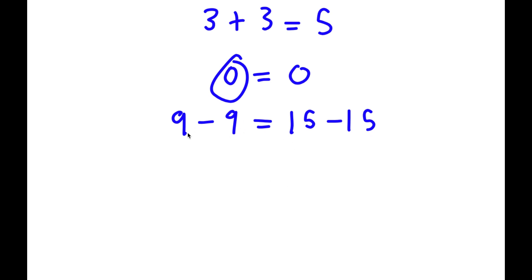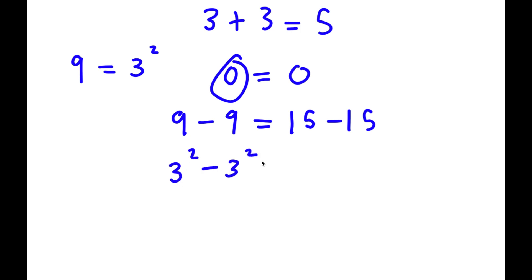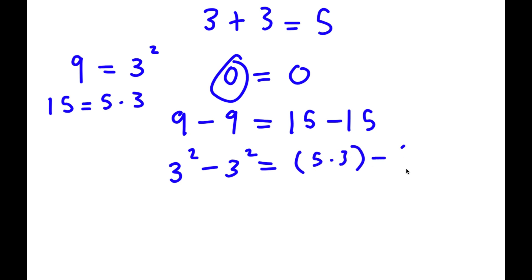For the left-hand side, nine is the same thing as three squared, so I'm going to write this as three squared minus three squared. For the right-hand side, 15 is equal to five times three, so I'll write this as five times three minus five times three.